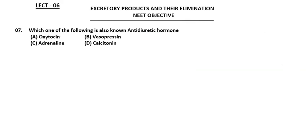Next question: which of the following is also known as anti-diuretic hormone? ADH — the options are oxytocin, vasopressin, adrenaline, and calcitonin. Oxytocin is released from the posterior pituitary and is responsible for childbirth and release of milk from mammary glands.